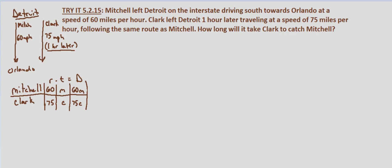I went ahead and drew a simple diagram. Mitch left Detroit going 60 miles per hour, and an hour later Clark left Detroit going 75 miles per hour. We set up our table using the uniform motion formula: rate times time equals distance.